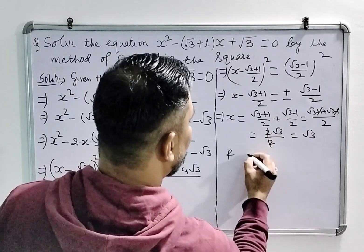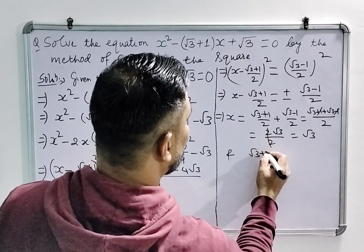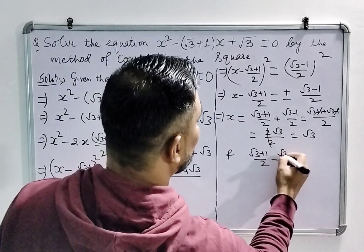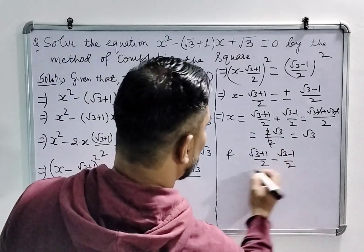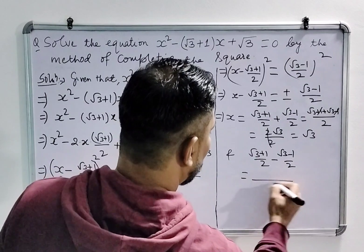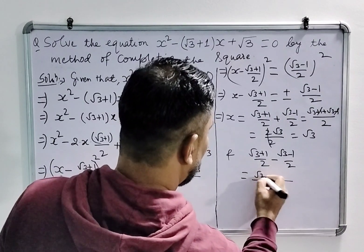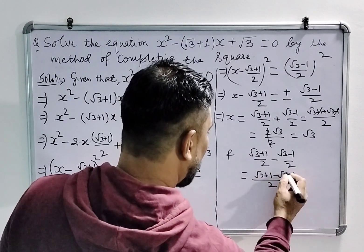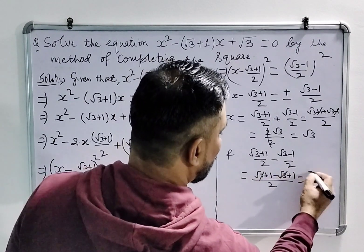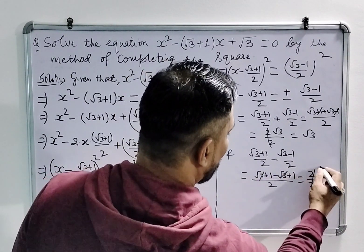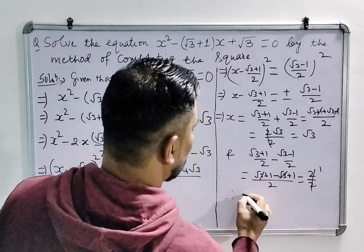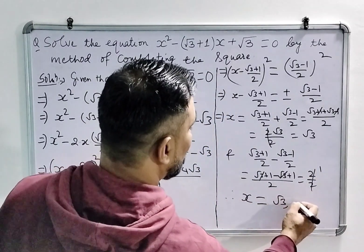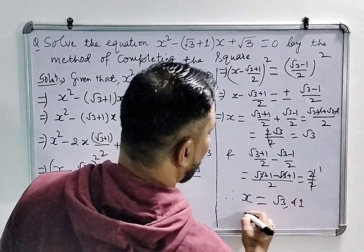And taking the negative value, (√3 + 1)/2 minus (√3 − 1)/2 will be equal to √3 + 1 − √3 + 1, so 2/2. So the values of x will be √3 and 1.